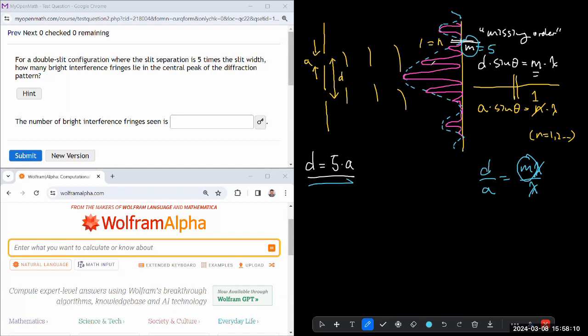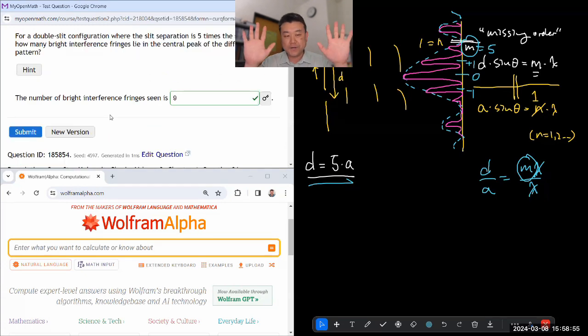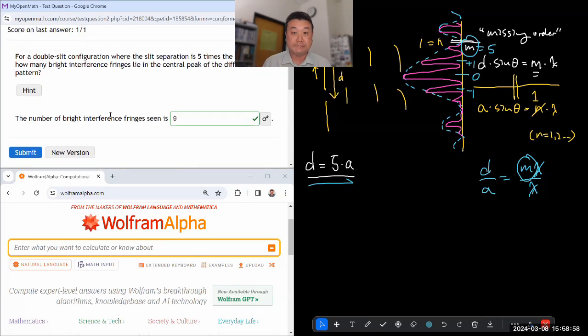For that location, these two angles happen to be the same. If you imagine doing this division, what you end up with is d over a equals m lambda divided by lambda - the sine thetas cancel, lambdas cancel. So you get this expression for the missing order: it's d over a. Given this information, that m must be 5. So it's a matter of counting how many non-disappeared bright fringes are there. There's zero, plus and minus one, plus and minus two, plus and minus three, plus and minus four. That's nine. I got ten fingers, so nine I can get within my ten fingers.